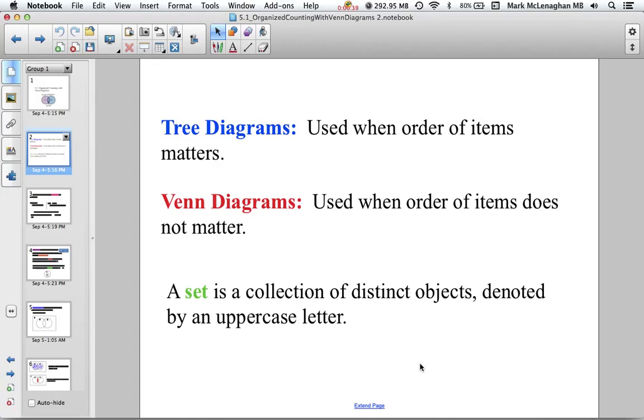In Chapter 4 we talked about tree diagrams. Tree diagrams were a good way of organizing items where order mattered, so we wanted to see the sequence of events being chosen. Venn diagrams don't really work with order. They're more about how the relationship happens, how one thing is related to another.